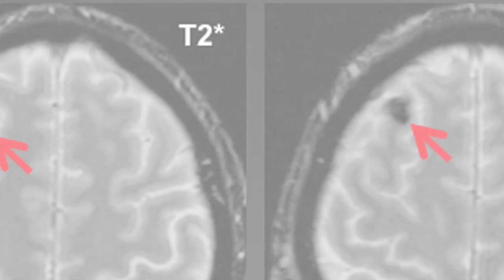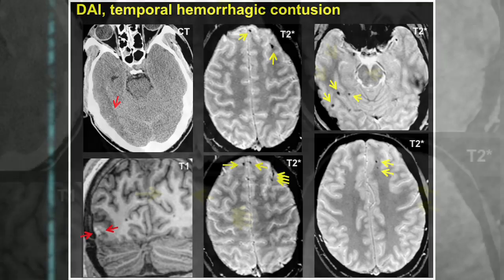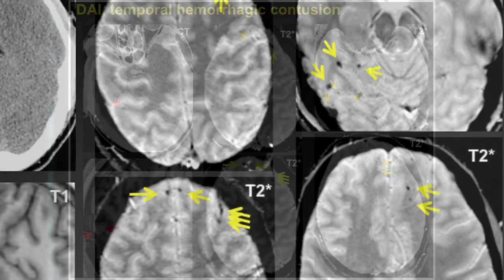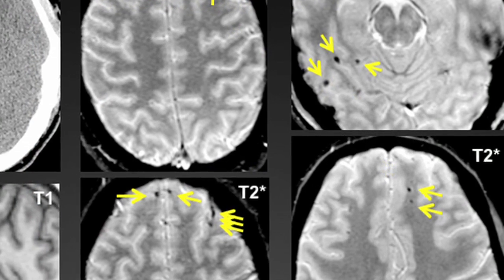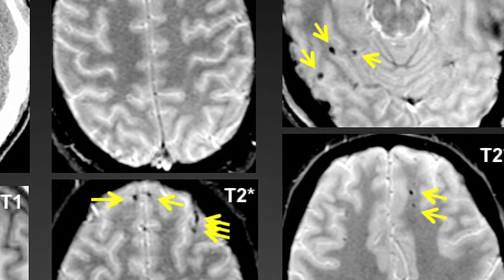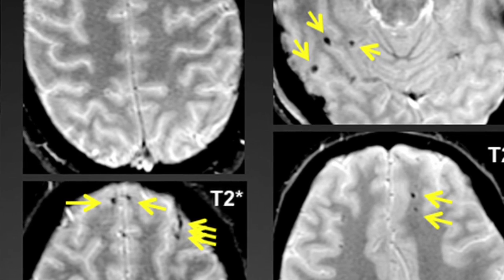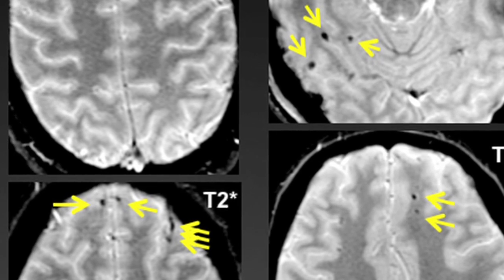Other patients have little hemorrhages within the white matter of the brain — what we call micro hemorrhages — and they show up as little black dots on the MRI scans. Those are indications of the patient's injury at a structural level.